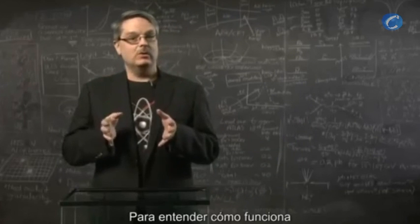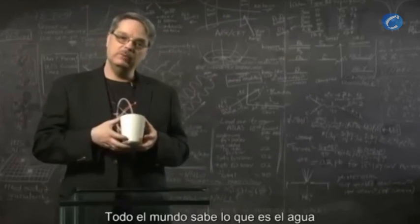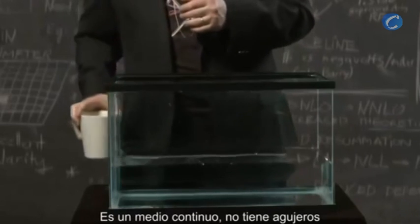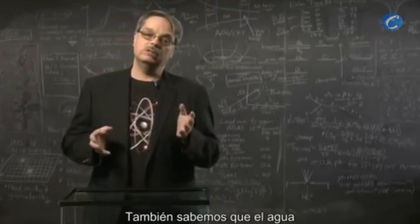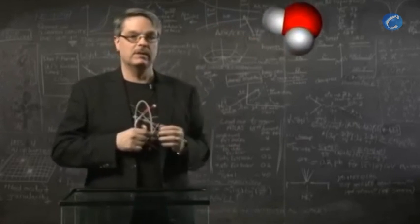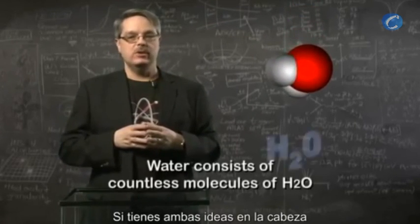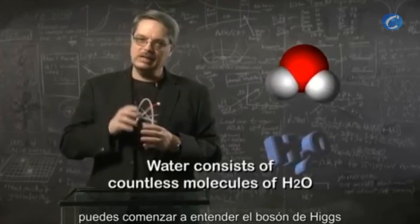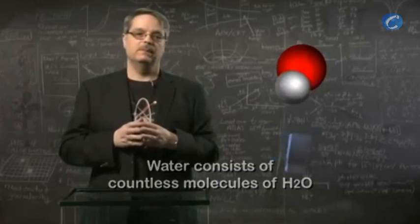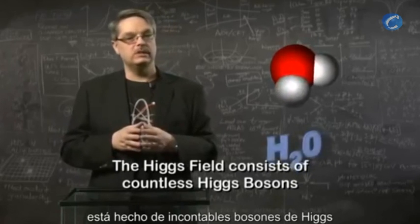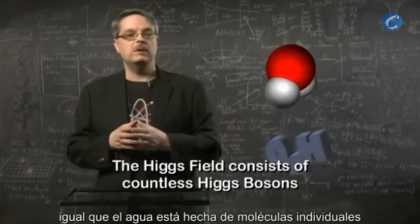To understand how that works, we should again return to water. Everyone knows what water is — if you're immersed in it, you know that water is everywhere. It's a continuous medium and there are no holes in it. We also know that water is made of molecules, specifically H2O. If you hold these two ideas in your head, with the realization that water consists of countless individual molecules, you can now begin to appreciate the Higgs boson. The Higgs field that gives subatomic particles their mass is made of countless individual Higgs bosons, just like water is made of individual molecules.